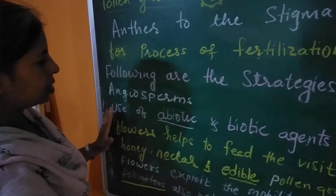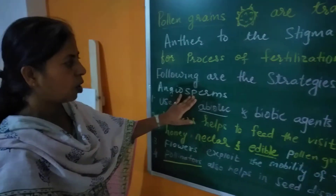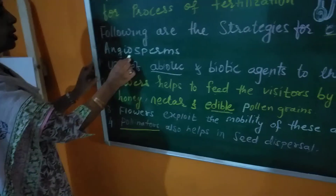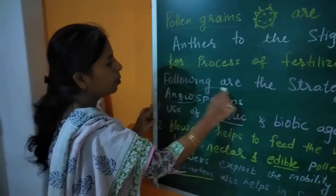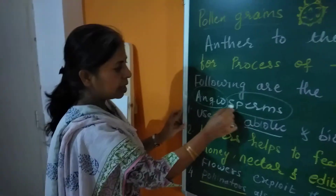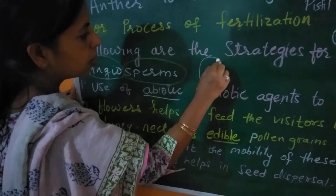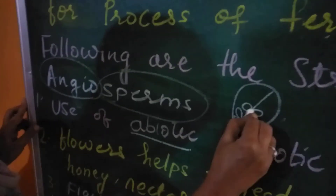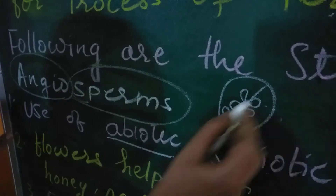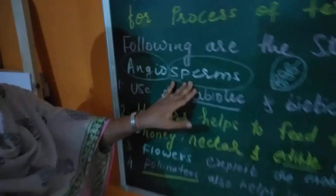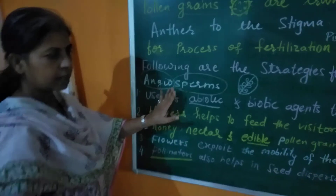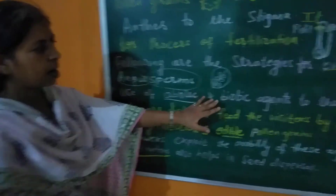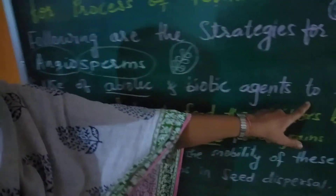So the first strategy explaining why angiosperms are an evolved group is the use of biotic and abiotic agents. The word angiosperm means: angio means inside and sperm means seeds — seeds are produced inside the fruit, which is why we call these plants angiosperms.